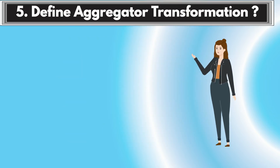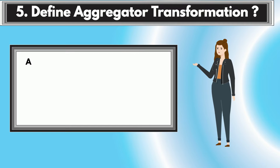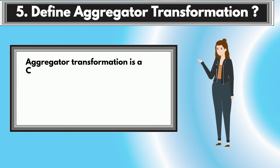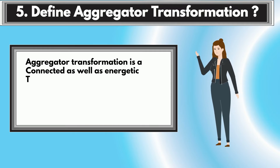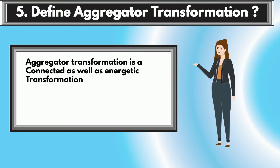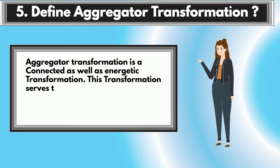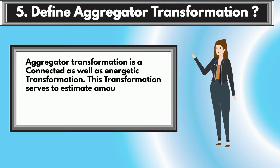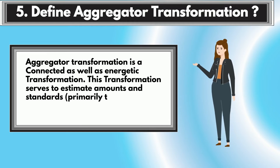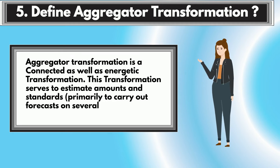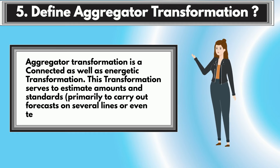Question 5: Define Aggregator Transformation. Aggregator Transformation is a connected as well as an active transformation. This transformation serves to estimate amounts and standards, primarily to carry out forecasts on several lines or even teams.